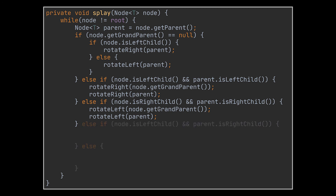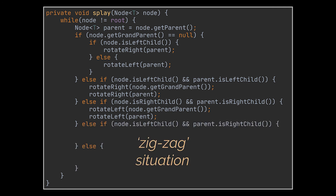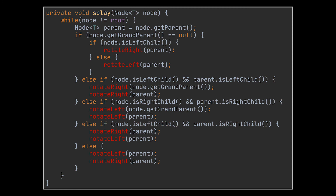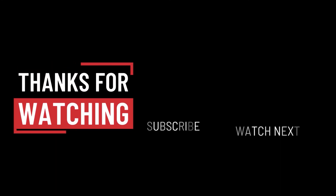The zig-zag cases are encountered when the node is a left child and its parent is a right child, or vice versa. These are resolved by applying a right rotation on the parent followed by a left rotation on its new parent, or a left rotation on the parent followed by a right rotation on its new parent. The rotate left and rotate right methods have exactly the same implementations as the ones covered in the red-black trees video — check the link in the description for details. With this, the implementation of the splay tree class is now complete. Thanks for watching and see you in the next one.